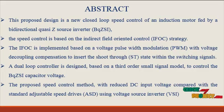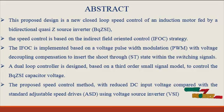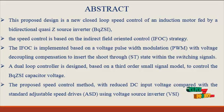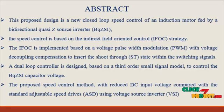A dual loop controller is designed based on a third order small signal model to control the bi-directional quasi-Z-source inverter capacitor voltage. The proposed speed control method with reduced DC input voltage, compared with the standard adjustable speed drives using voltage source inverter, is able to change the motor speed from zero to the rated speed with the rated rotor.